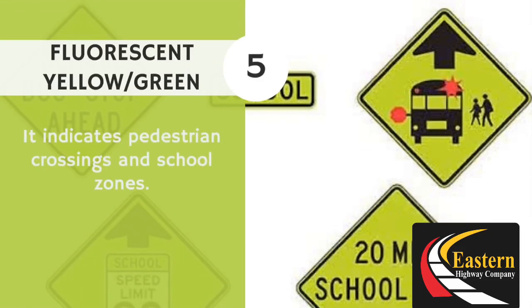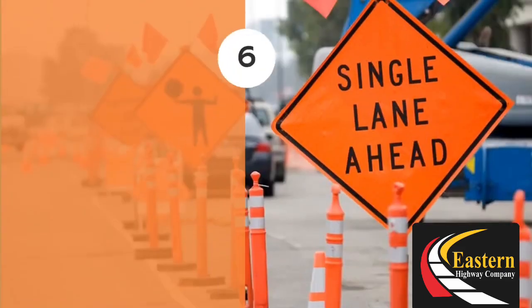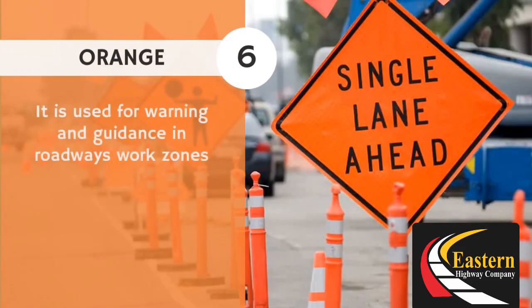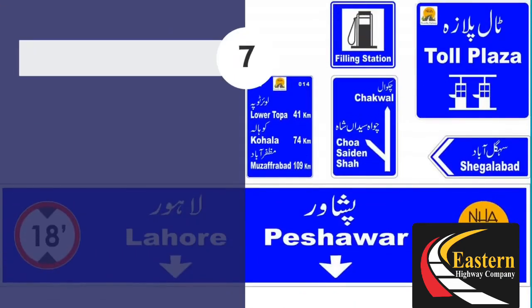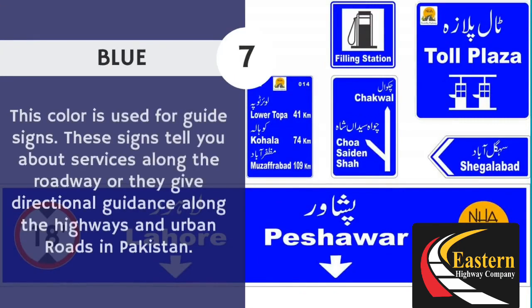Fluorescent yellow-green: it indicates pedestrian crossings and school zones. Orange color: it is used for warning and guidance in roadway work zones. Blue color: this color is used for guide signs. These signs tell you about services along the roadway or give directional guidance along the highway and urban roads in Pakistan.